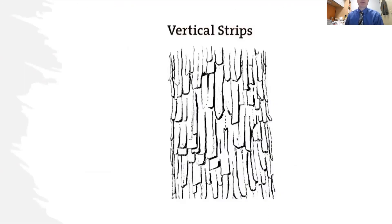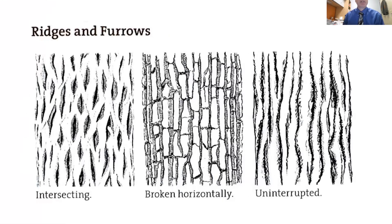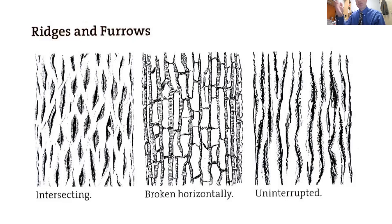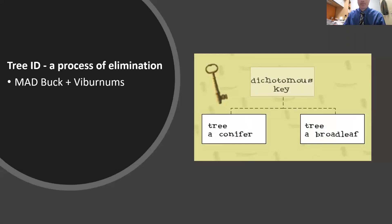Then you get vertical strips — white oak, Quercus alba, is a good example. There are also ridges and furrows: intersecting ridges and furrows that look kind of like a fisherman's net; ridges broken horizontally where you can see them going straight up and down with horizontal cracks; and uninterrupted ridges that look more like wavy lines. Tree ID is really just a process of elimination — like a road map where you either turn right or left. If you turn right when you should have gone left, you'll get lost. So I highly recommend learning the terminology before you tackle keys.